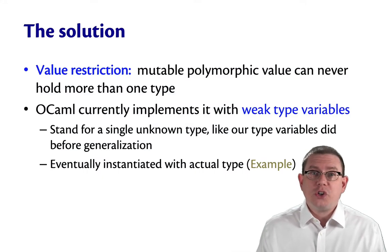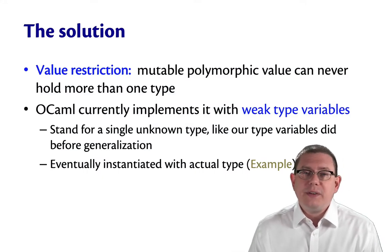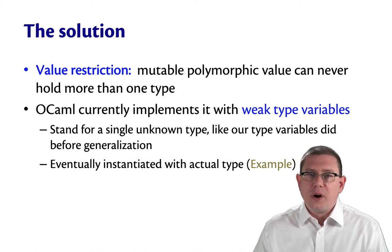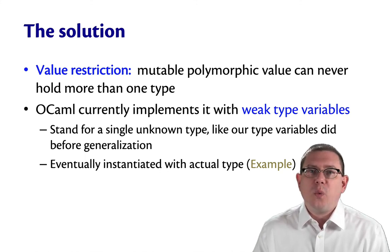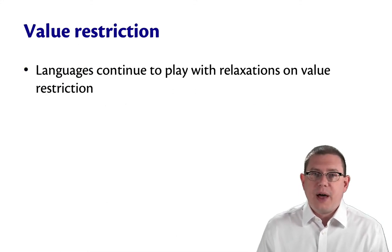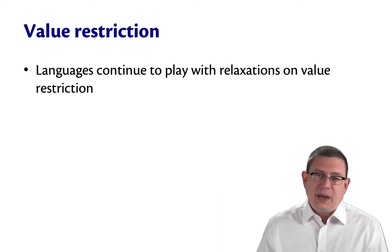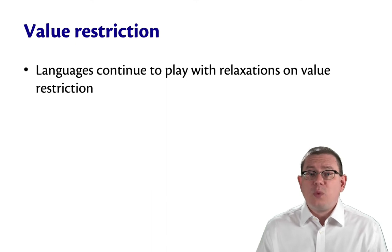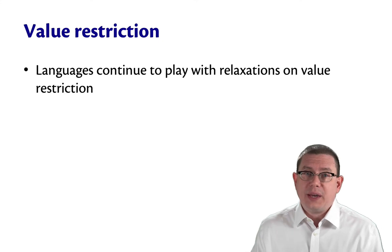So that's the value restriction. It's possible you've even seen it crop up in your own code before. Now that we've studied type inference, you can appreciate why it's there. As I said before, OCaml currently implements the value restriction with weak type variables, but other languages have played with different ways of enforcing it. And languages continue to play around with relaxations of it, because it turns out there's sometimes you can get away without requiring it completely.